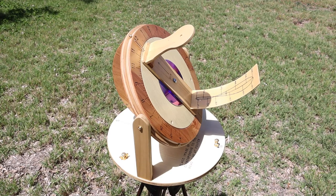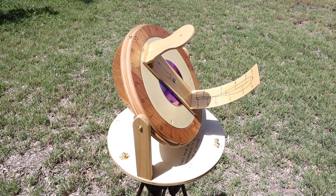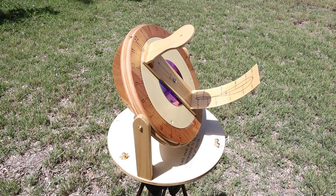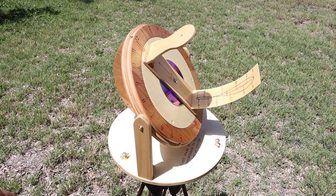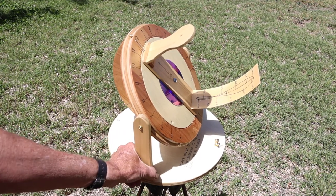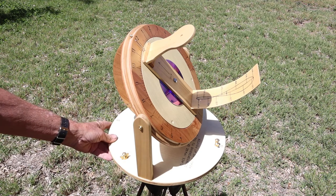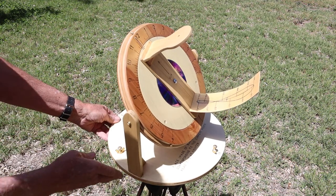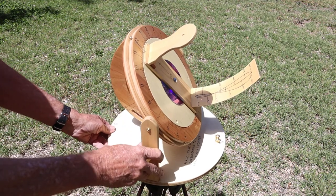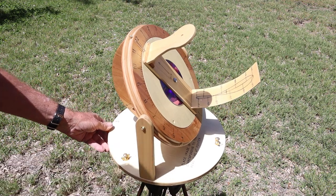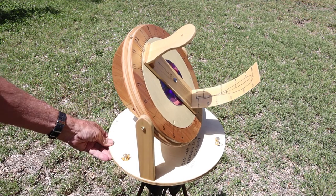So this is my precision sundial, also known as a helioquinometer, and the way it works is, first of all, this has to be aimed directly north, north and south, has to be aimed at the north pole. So I've got it set up, aimed more or less north.